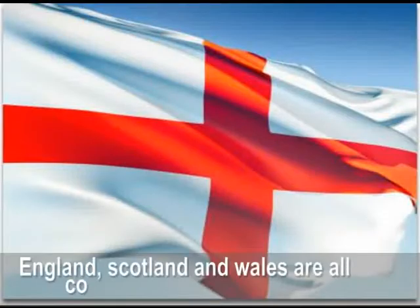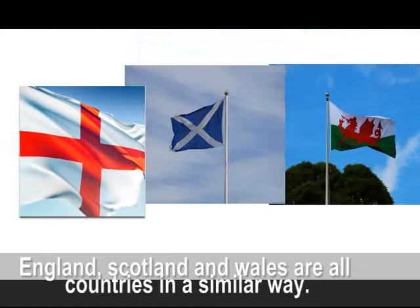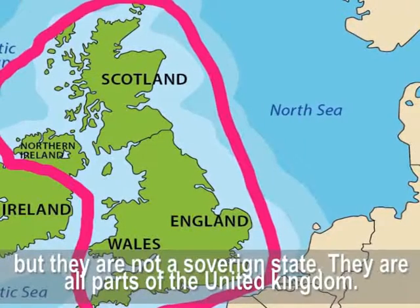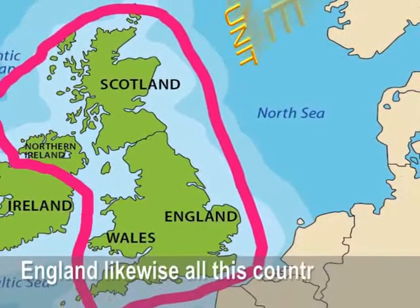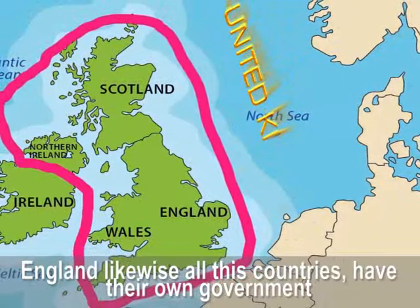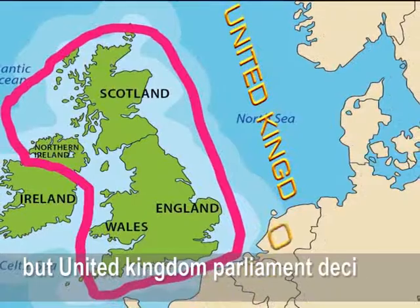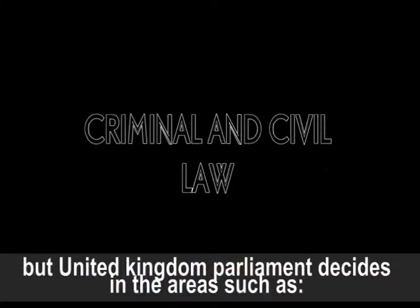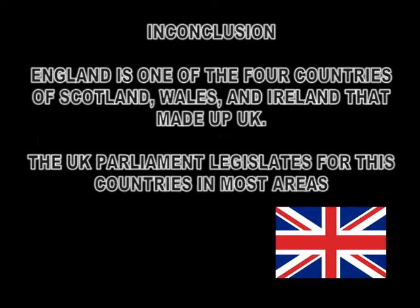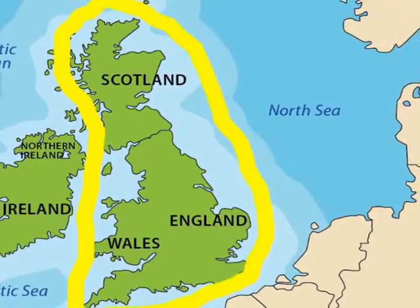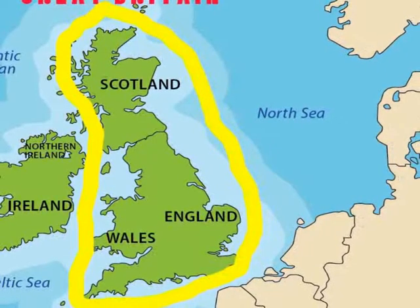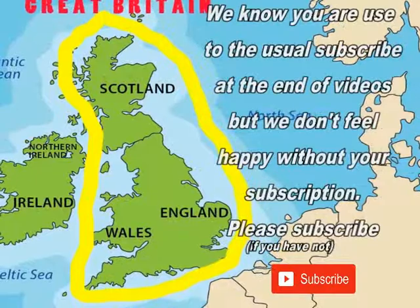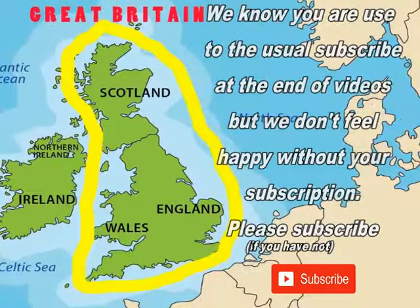England, Scotland and Wales are all countries in a similar way, but they are not sovereign states. They are all parts of the country of the United Kingdom. England, like all these countries, has its own government. But the United Kingdom parliament decides in the areas of military, transportation, criminal and civil law, and foreign and domestic trade. In fewer words, England is one of the four countries — Scotland, Wales and Northern Ireland — that formed the UK. The UK parliament legislates for these countries in most areas. Great Britain is not a sovereign entity; it is the largest landmass in Northern Europe, encompassing Scotland, Wales and England.